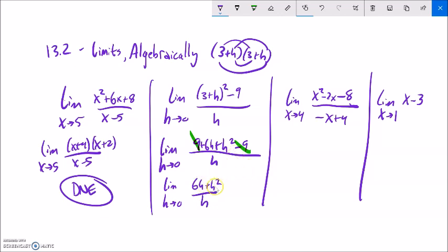Oh yeah, I can factor an h out of here. The limit as h approaches 0 of h times 6 plus h over h. That h divides out. So I'm really finding the limit as h approaches 0 of 6 plus h. I can plug it right in. 6 plus 0 is 6. Cool.